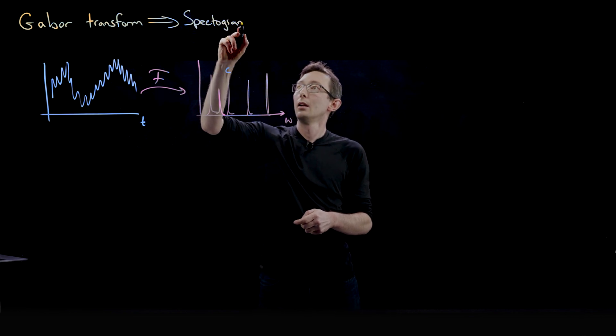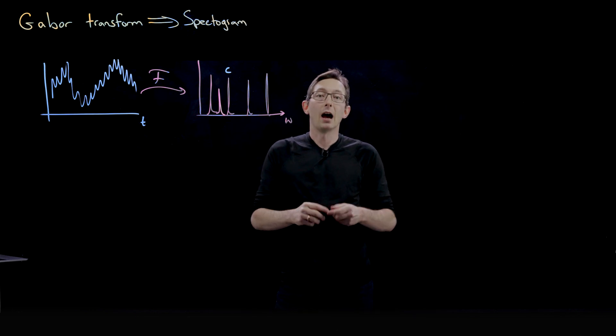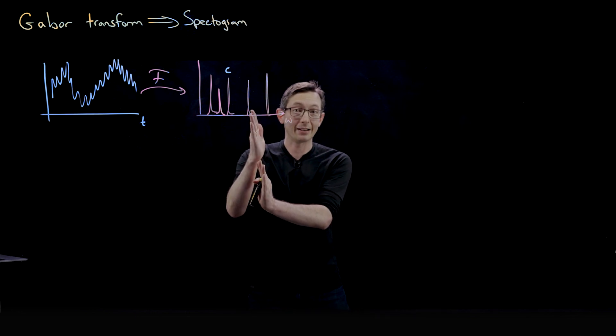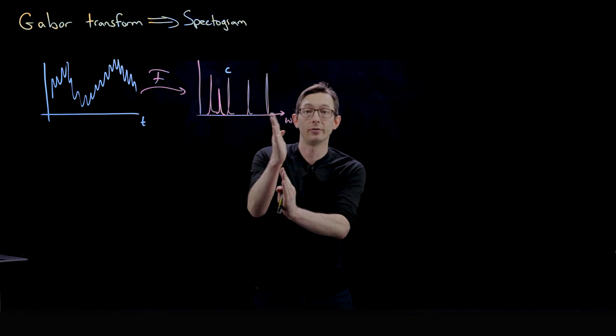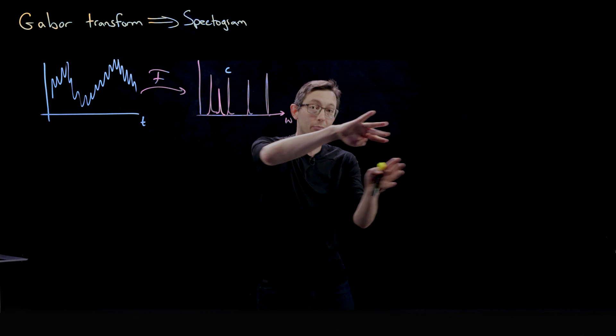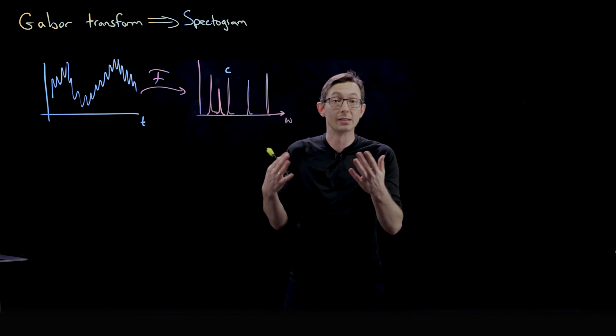The spectrogram, which essentially is a time frequency plot of what frequencies are active in specific instances in time. So it's a map evolving in time of what frequencies are being played. I always think about this in terms of the piano or guitar music.